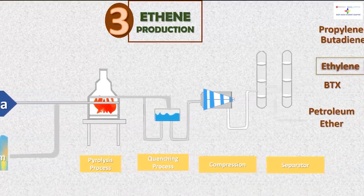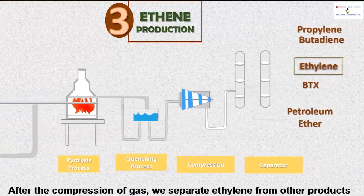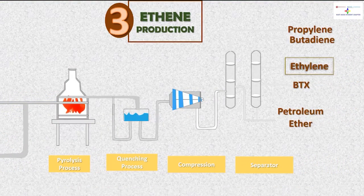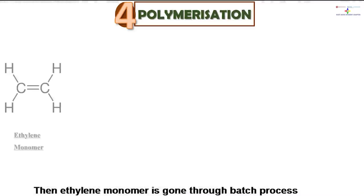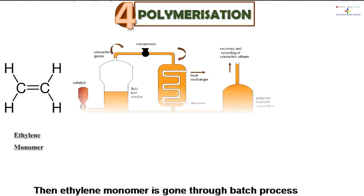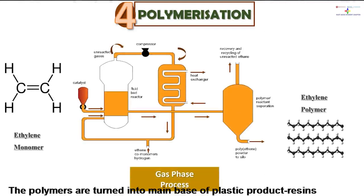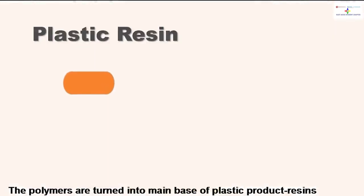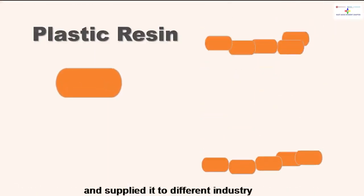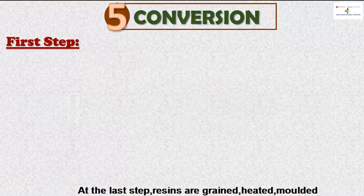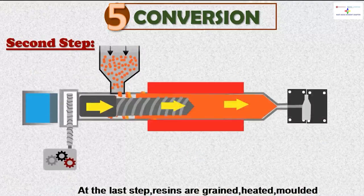The naphtha is cracked at over 800 degrees Celsius in a pyrolysis process. In the quenching process, gases are cooled down and separated. After compression of the gas, ethylene is separated from other products. The ethylene monomer then goes through batch processes like the gas phase process or solution process to produce polyethylene. The polymers are joined into the main base of plastic products — resins — and supplied to different industries.